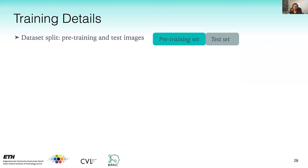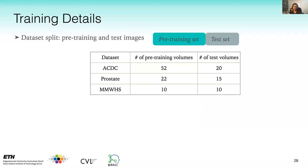For training details, each dataset is split into a pre-training set and test set, with the test set used only at the end. During pre-training, only images are used — no labels. After pre-training, we fine-tune by dividing the pre-training set into a label set and validation set. We tried three configurations: one, two, and eight 3D labeled volumes, with validation always fixed at two 3D volumes. We run experiments six times and report mean Dice score across all structures.